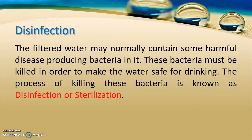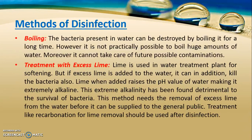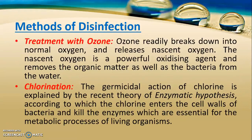After filtration, the next process is disinfection, also called sterilization. Since rapid sand filters are used in water treatment plants, much of the bacteria is not removed by this filter alone due to its lower efficiency. Disinfection is the process of killing bacteria present in the water. Methods of disinfection include boiling, treating with lime, treating with ozone, and chlorination. Boiling is used in households, especially in the rainy season, but it is not practically possible for large volumes in a water treatment plant. Chlorination is the most common method used, where chlorine gas is added to the water to remove bacteria.